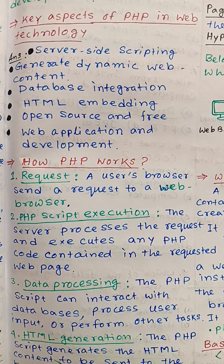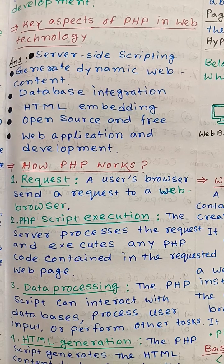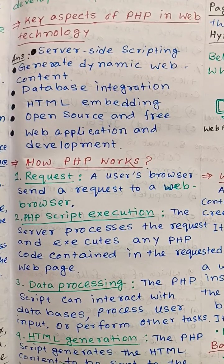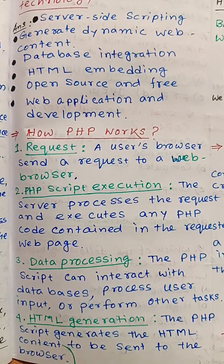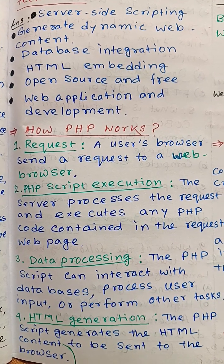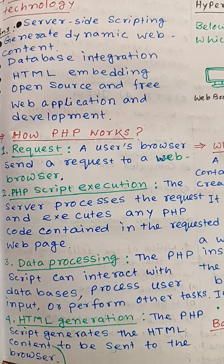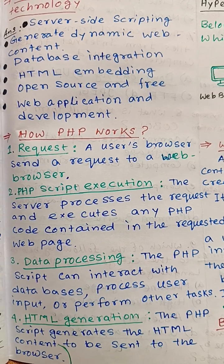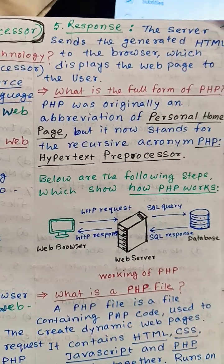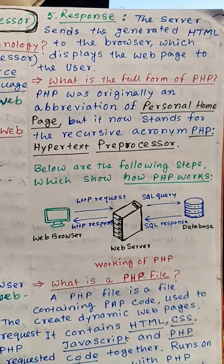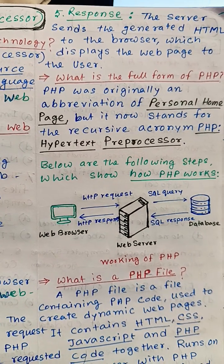How PHP works: The user's browser sends a request to the web server. Then the server processes the request and executes any PHP code contained in the requested web page. The PHP script can interact with databases, process user input, or perform other tasks. The PHP script then generates the HTML content, and the server sends the generated HTML to the browser, which displays the web page to the user.